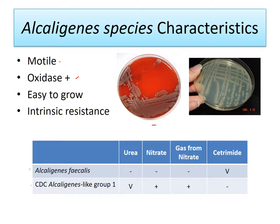How do I differentiate Alcaligenes faecalis from CDC Alcaligenes-like group one? The nitrate test is going to help here — for CDC group one, nitrate is positive and you also see gas in the Durham tube. Those are the two big ones that differentiate, because Alcaligenes faecalis is negative for both. The variables are less helpful, although a positive urease indicates it's not faecalis, and a positive cetrimide rules out CDC group one.